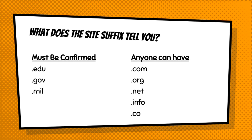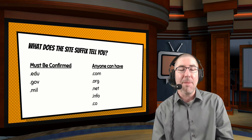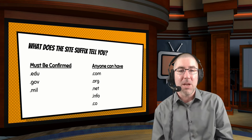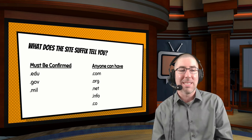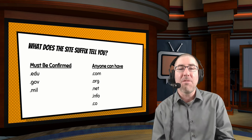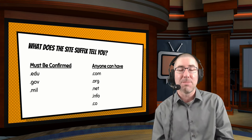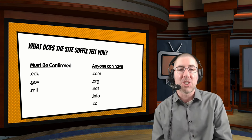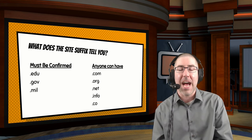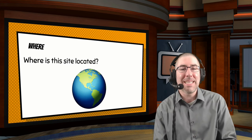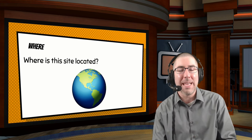An important 'what' is what does the suffix of the URL tell them? Some students may be familiar with this, some may have no idea. Certain suffixes have to be confirmed: .edu has to be education, .gov has to be government, .mil has to be military. But anybody in the world can own .com, .org, .net, .info, or .co. It can be fun to find sites that look really legit but aren't, just because they have a .com or .org.